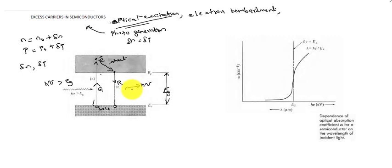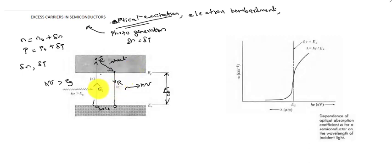Direct band gap semiconductors are used for manufacturing LEDs. Silicon and germanium are easily available, but we are not using silicon for manufacturing LEDs. We use compound semiconductors such as gallium phosphide and gallium nitride, since they are direct band gap semiconductors. Only direct band gap semiconductors are used for manufacturing LEDs, meaning recombination occurs directly from the conduction band to the valence band without any trapping levels. We will discuss the different recombination mechanisms later.